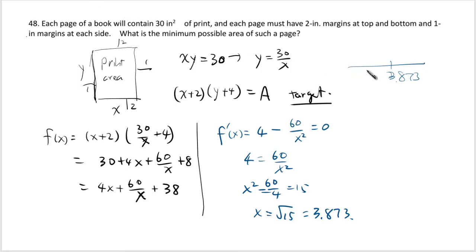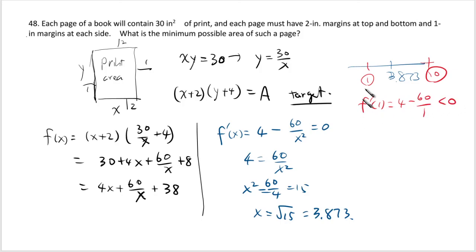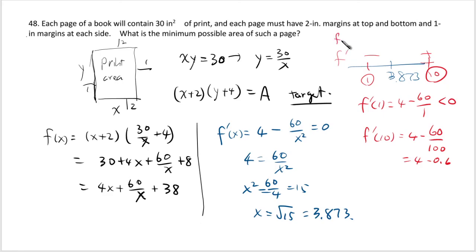A'(1) = 4 − 60/1 = −56, which is negative. A'(10) = 4 − 60/100 = 4 − 0.6 = 3.4, which is positive. So f is decreasing then increasing, confirming x = √15 gives an absolute minimum. Plug back into the original function to get the minimum area.